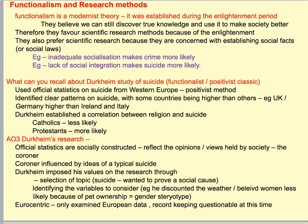A better point to make is that Durkheim discounted certain variables himself — he discounted the weather for no apparent reason. And he argued that women were less likely to commit suicide because of pet ownership, particularly cats — which is very much a gender stereotype. That's a good example to remember. And finally, he was Eurocentric — he only examined European data, and record-keeping at that time was pretty questionable, as there were no computerised databases.